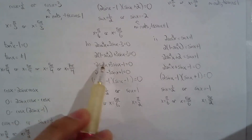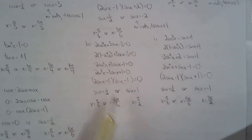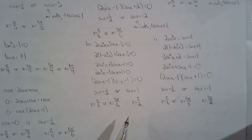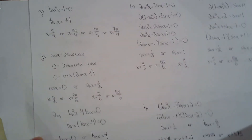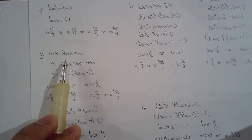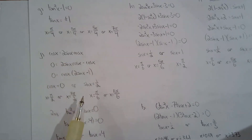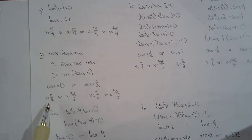H — not much to say. Pythagorean identity, factor, and then find the angles. I — Pythagorean identity. J — set it equal to 0 and then common factor cos x. Please don't divide both sides by cos x because you will lose the solutions of pi over 2 and 3 pi over 2.